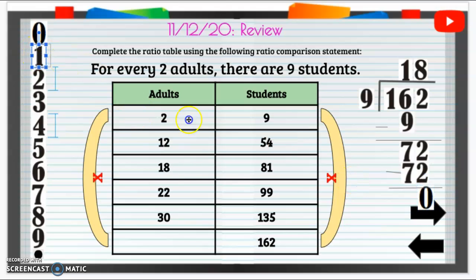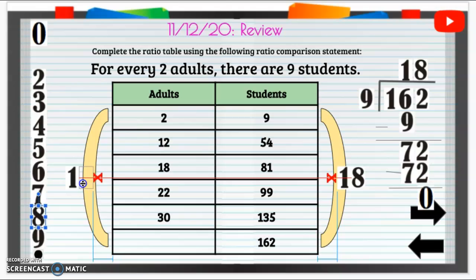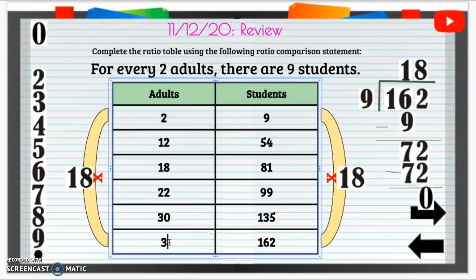Now we're going to have to do two times 18. So two times 18, let's take a look. Well two times 18, I know that's 36. So I am going to write down 36. And that is finally it for our review.